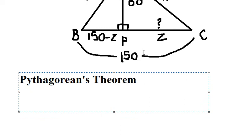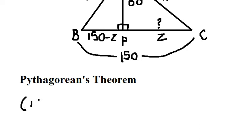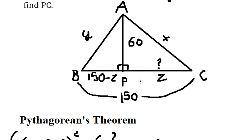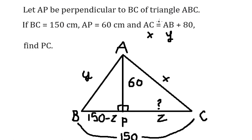So this one we will have (150 - z)² + 60² = y². And the second one, that is z + 60² = x². And the next one, that is about this one.